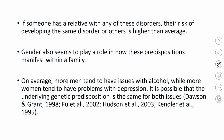Gender also plays a role in how predisposition manifests. Men tend to have more issues with alcohol while women tend to have more problems with depression. It is possible the underlying genetic predisposition is the same, but it manifests differently — more as depression in females and more as alcohol-related issues in males.